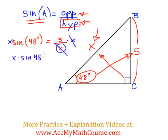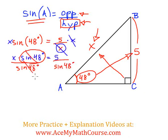We end up having x times the sine of 48 degrees equals 5. I still want to isolate x, so I will get rid of the sine 48 by dividing both sides of the equation by sine 48 degrees. So x equals 5 over sine 48.